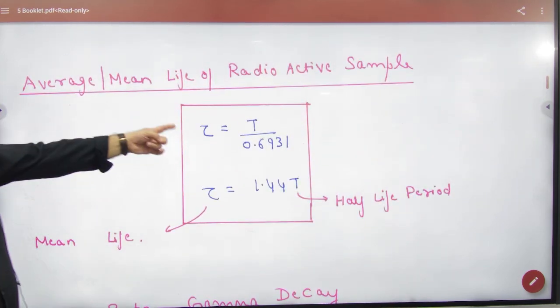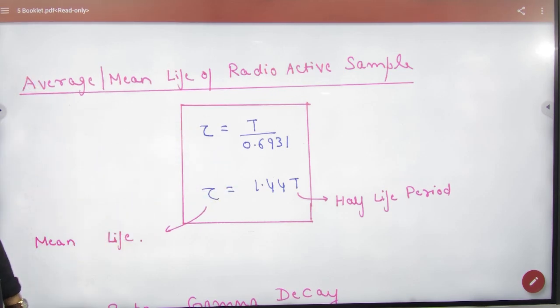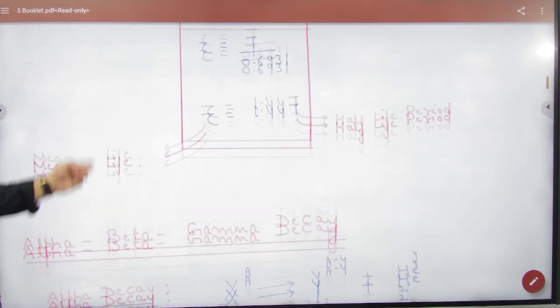Mean life has been discussed. Mean life is 1.44 times the half-life period.